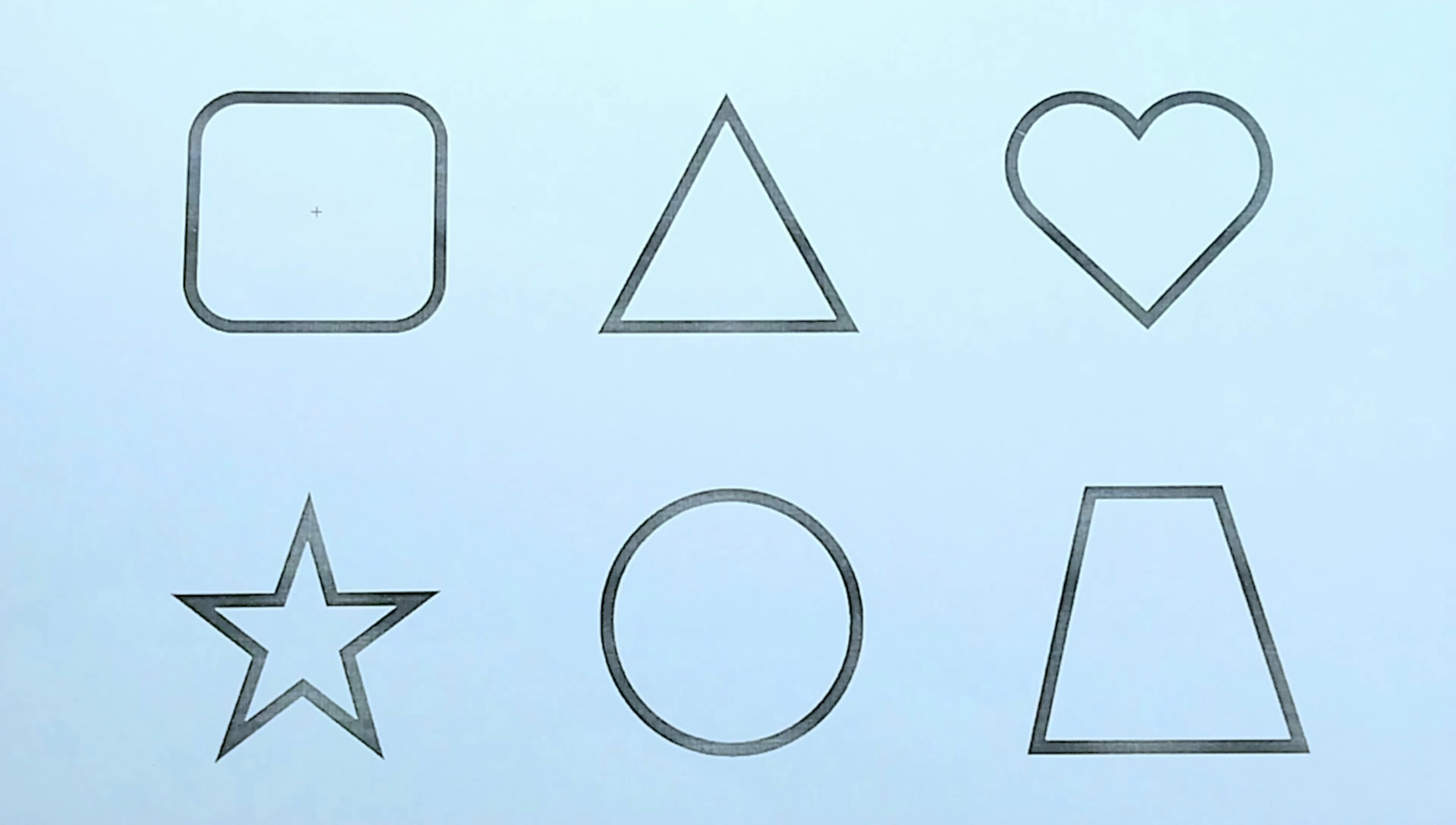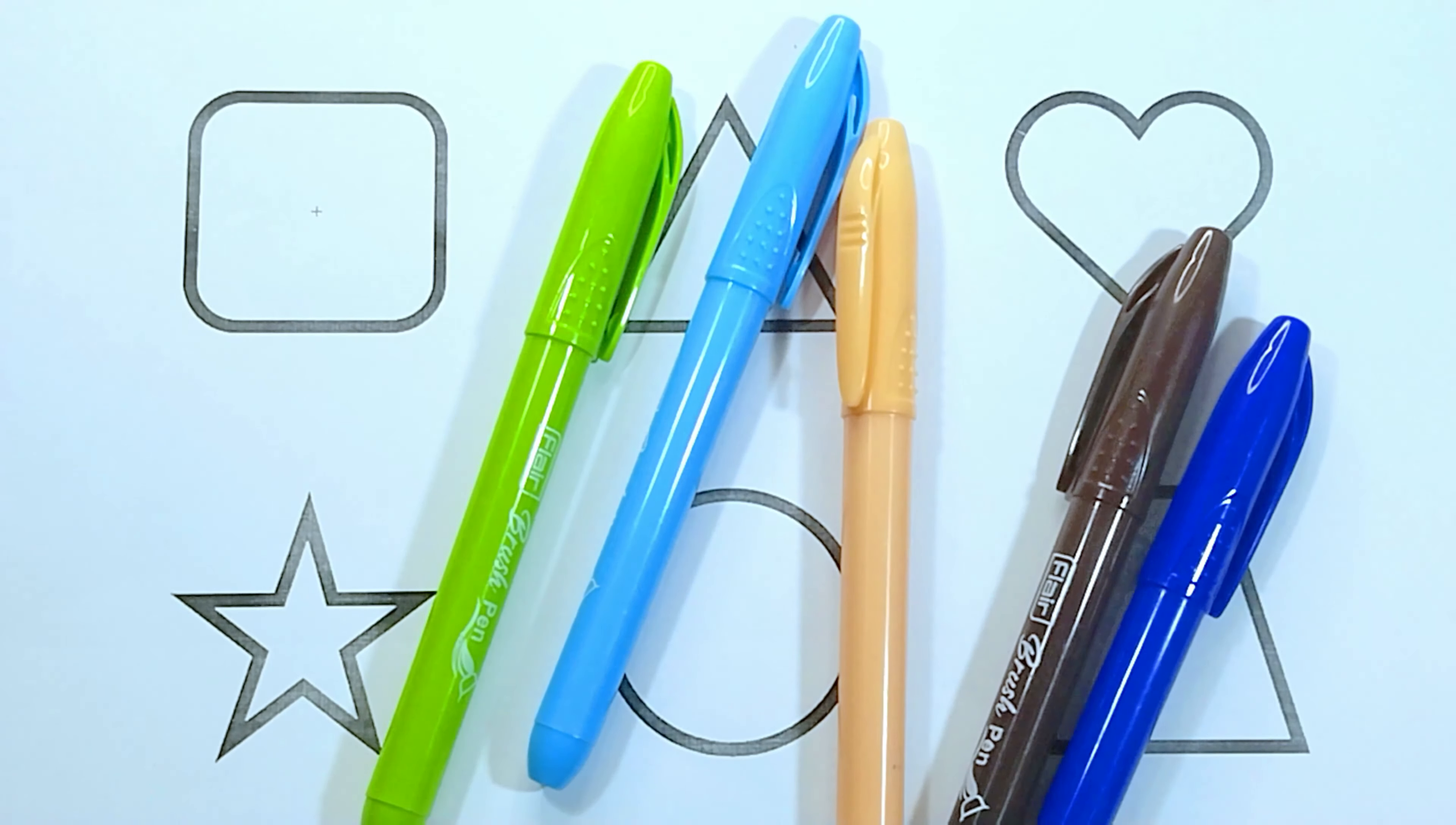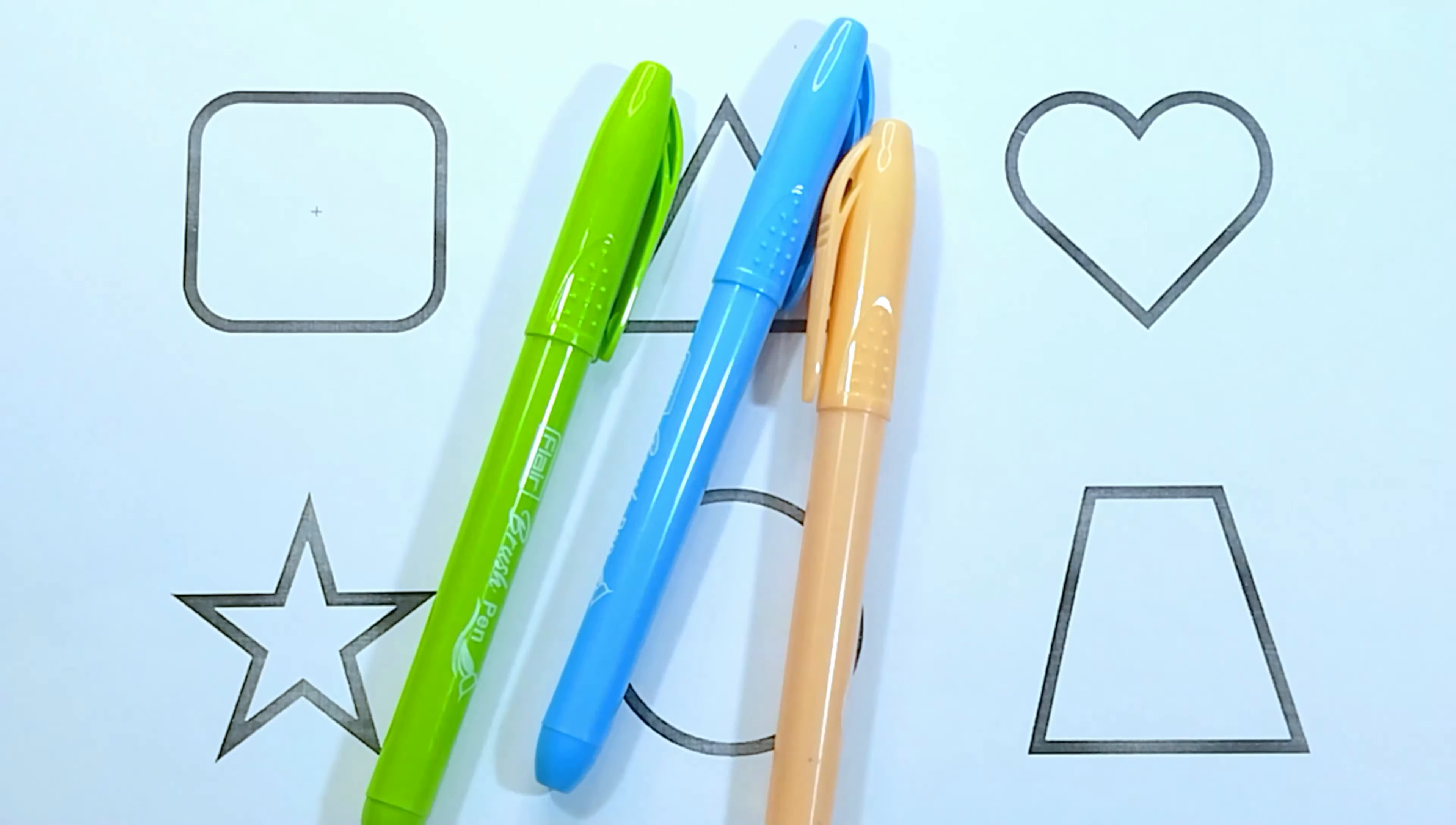Today we are going to learn about some shapes and colors. The colors are red color, blue color, brown color, peach color.